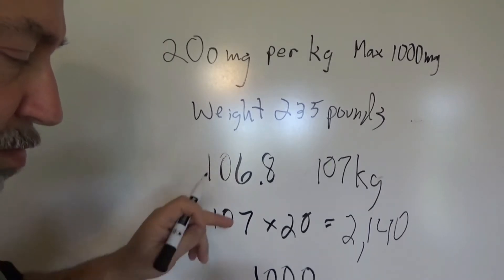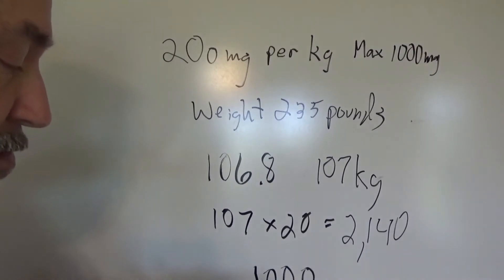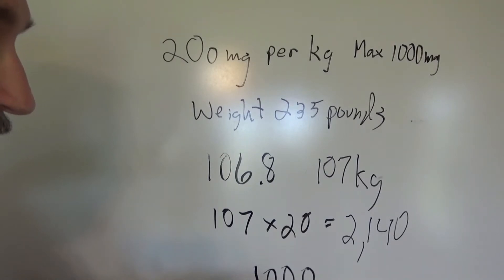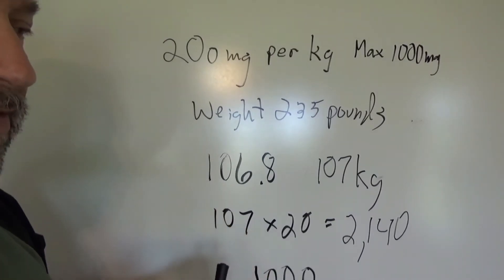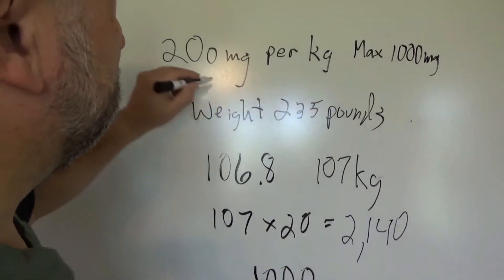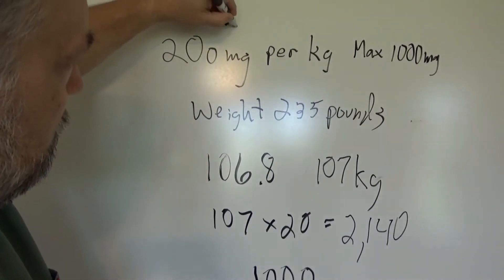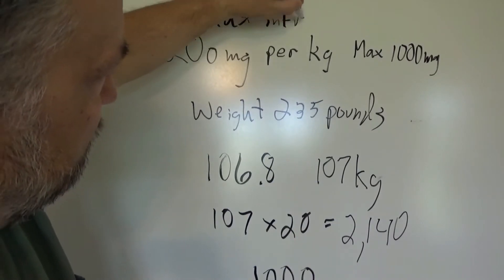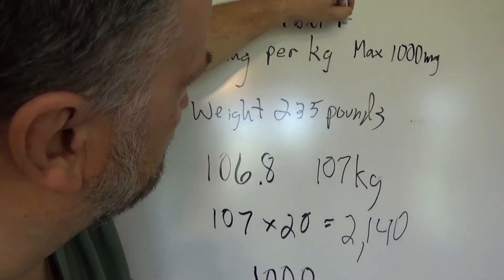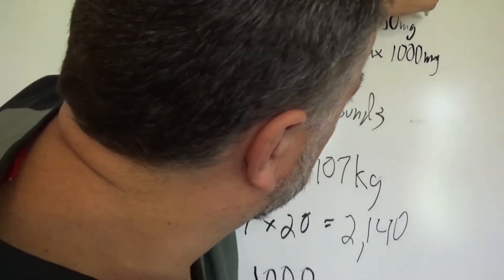We give 1000 milligrams. Now there's another part of this: the patient weighs 235 pounds, the ordered dose is 20 milligrams per kilogram with a max of 1000 milligrams IV infusion, and the infusion is not to exceed 50 milligrams per minute. Whatever your dose is, it cannot be infused faster than 50 milligrams per minute. So the max infusion rate is 50 milligrams per minute.